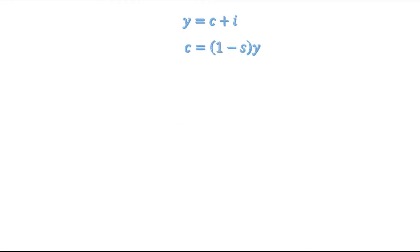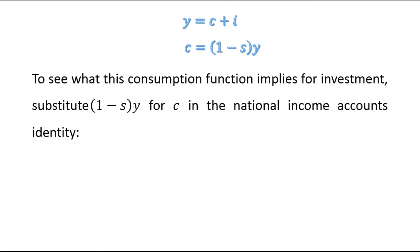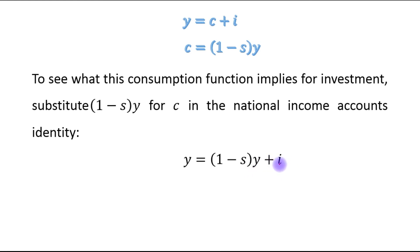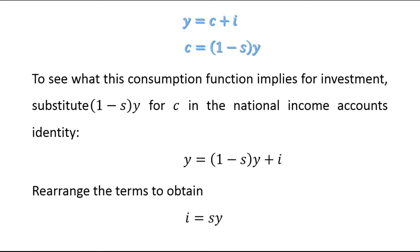We now have two equations: the per-worker version of the national income accounts identity, and the consumption function where small s denotes the saving rate. To see what the consumption function implies for investment, we substitute 1 minus s times y for c in the national income accounts identity. Substituting gives y equals 1 minus s times y plus i. Rearranging the terms, we obtain i equals s times y.